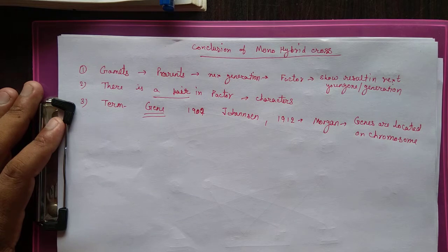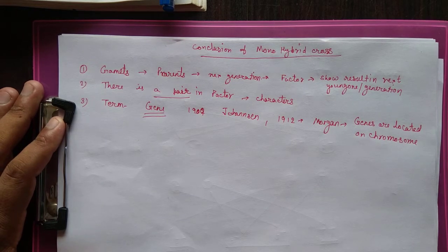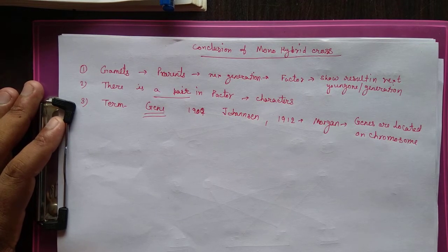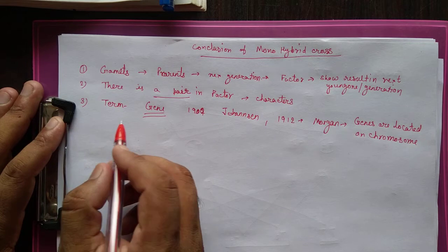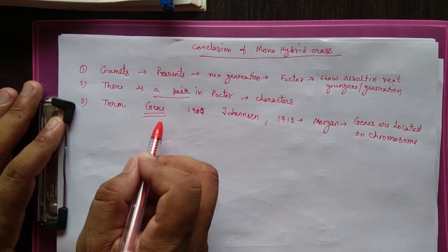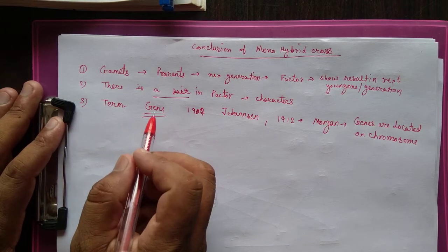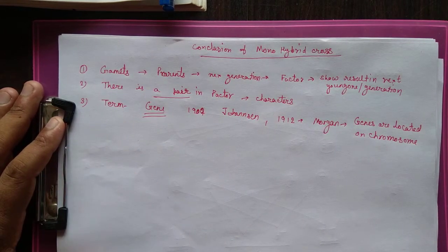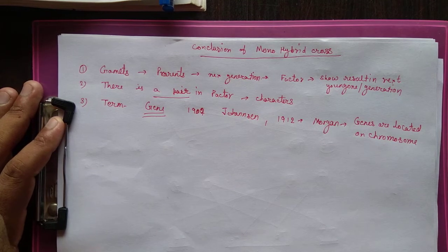So in summary: first, gametes carry factors responsible for characters; second, each character is controlled by a factor having two half units; and third, these factors are known as genes.